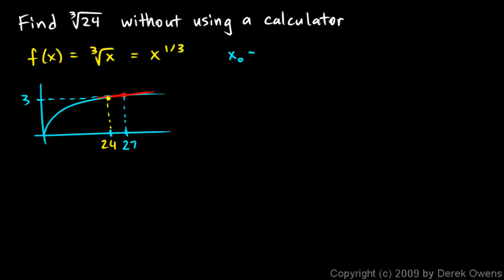I'm going to call x0, that's my known value, the value at which I know f(x). So x0 is 27. And f(x0) is just the cubed root of 27, which is just 3.